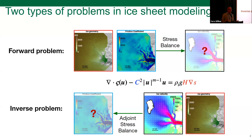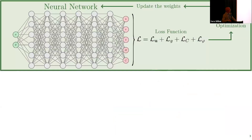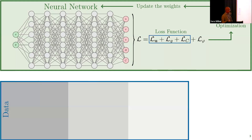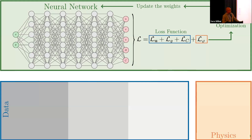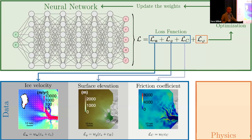The standard way to solve this is using the adjoint stress balance equation — an adjoint method to infer the basal friction coefficient from geometry and velocity. In this talk, I'll show how we solve both forward and inverse problems using physics-informed neural networks (PINNs). The architecture has a neural network whose inputs are coordinates, and it learns all the state variables given those coordinates.